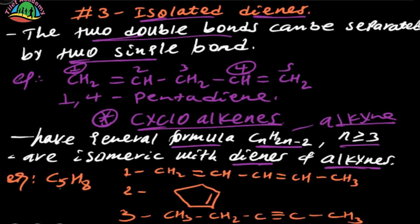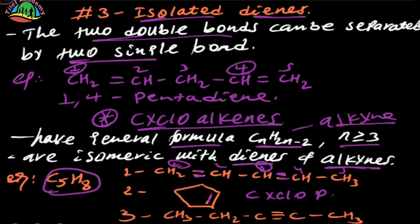For example, here is C5H8. C5H8 is the isomeric formula. The double bonds are positioned here and here. The alkyne shares the same general formula with dynes. These are two different cycles of the alkyne.